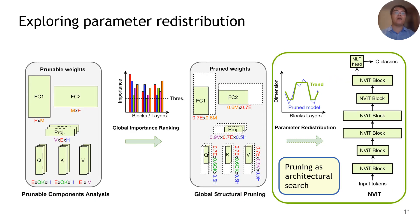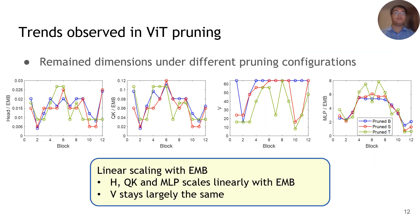With the pruned models, we introduce our findings on using pruning as an architectural search tool to explore parameter redistribution of efficient vision transformers. We look at the remaining dimensions of each pruned model to see if any trends can be discovered. Interestingly, we find models pruned to different sizes follow simpler trends in parameter distribution. As shown in the figure, for models pruned to different sizes, the remaining head count, QK dimension of each head, and MLP dimension scale linearly with the embedding size of all blocks, while the V projection dimension of each head stays largely the same during the pruning process.